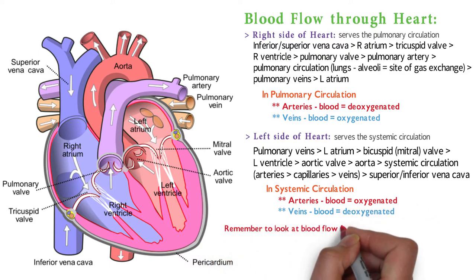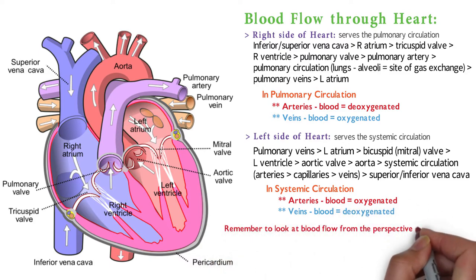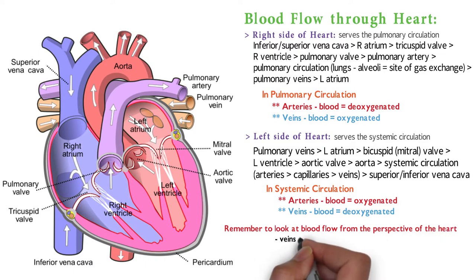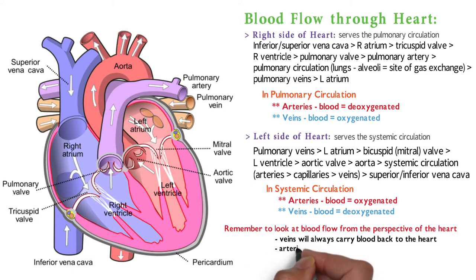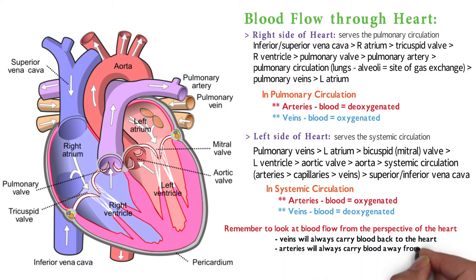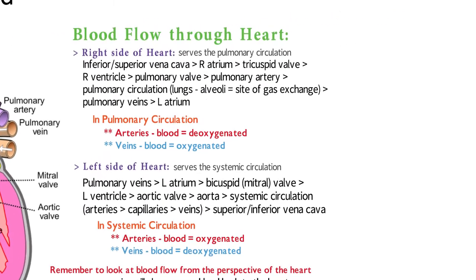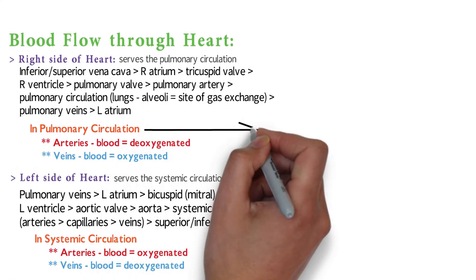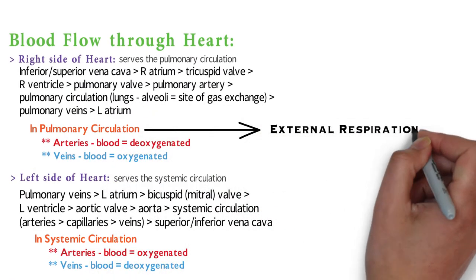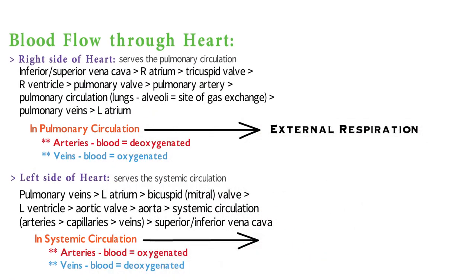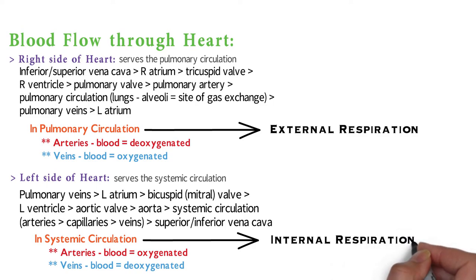Remember to look at blood flow from the perspective of the heart: veins will always carry blood back to the heart, while arteries will always carry blood away from the heart. Pulmonary circulation is external respiration, while systemic circulation is internal respiration.